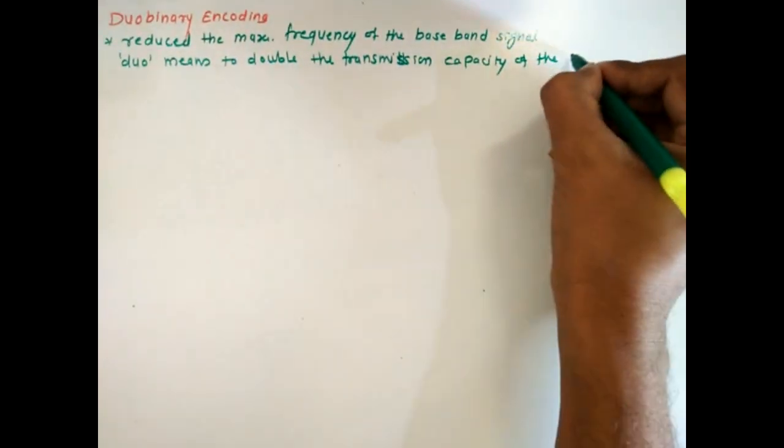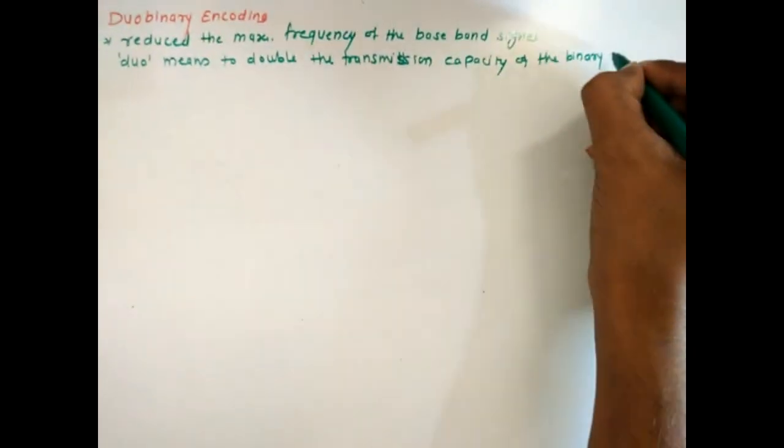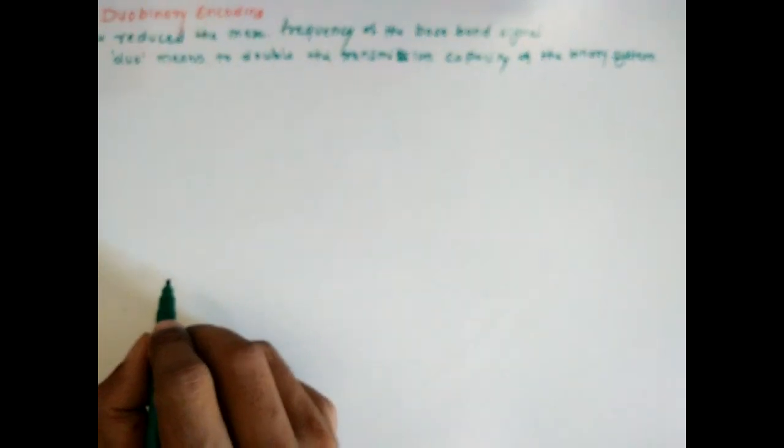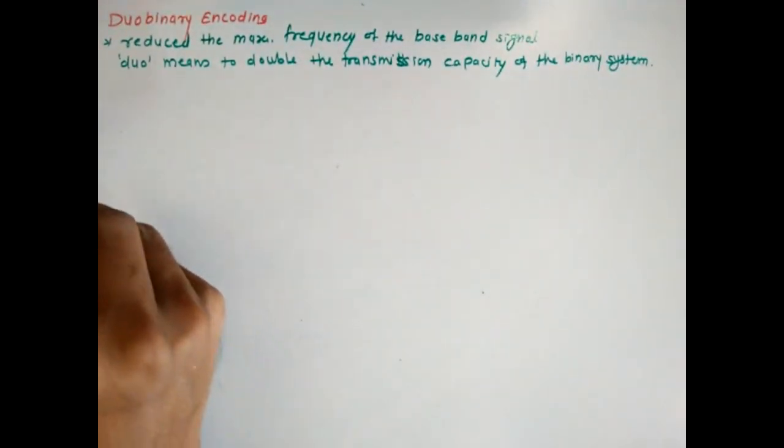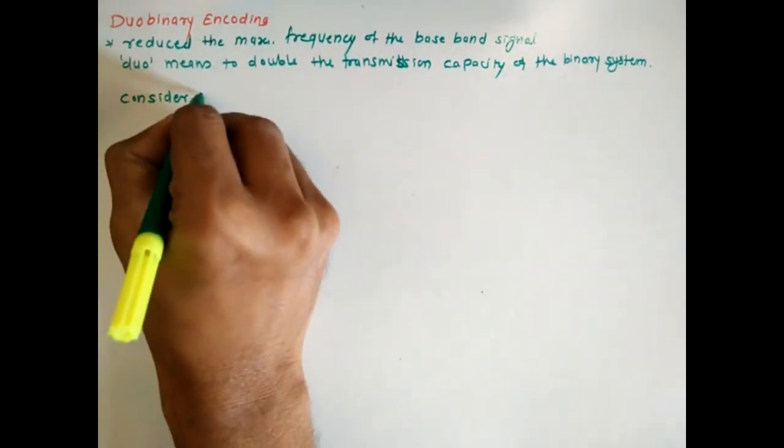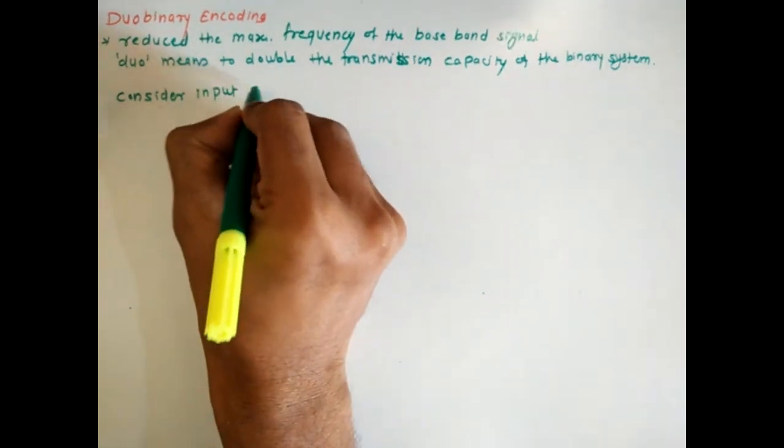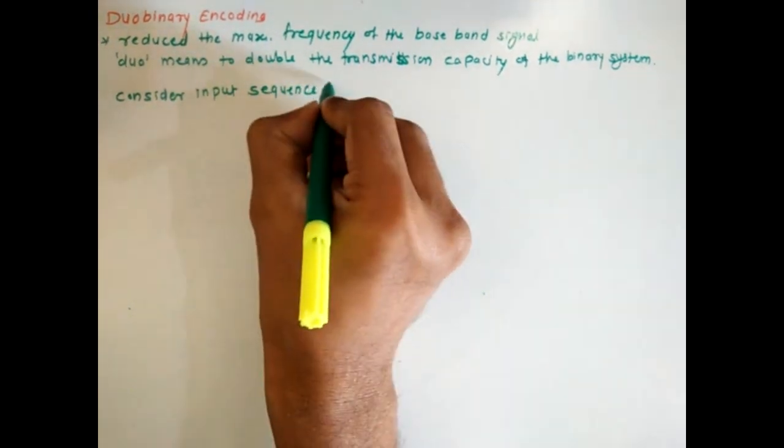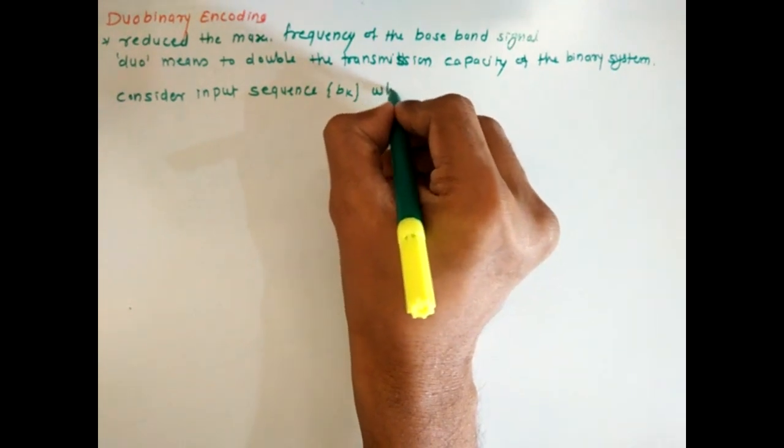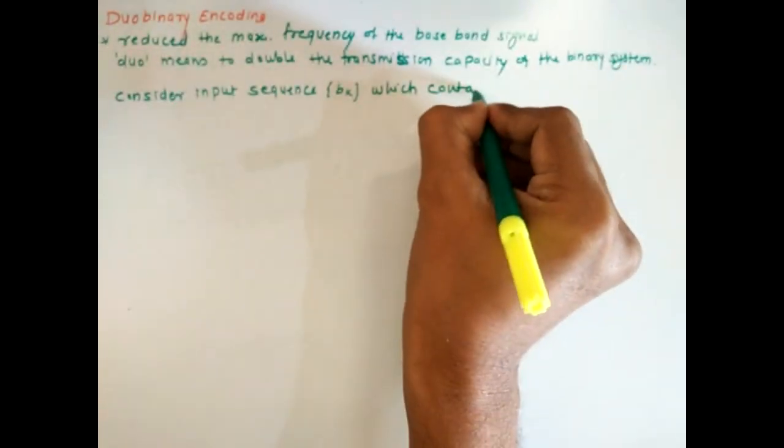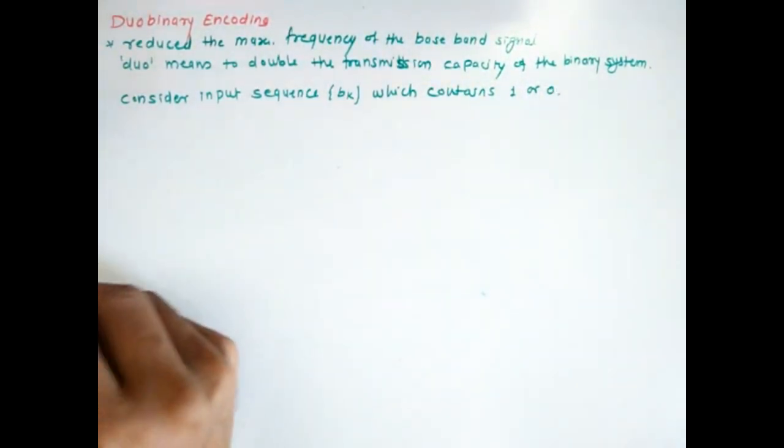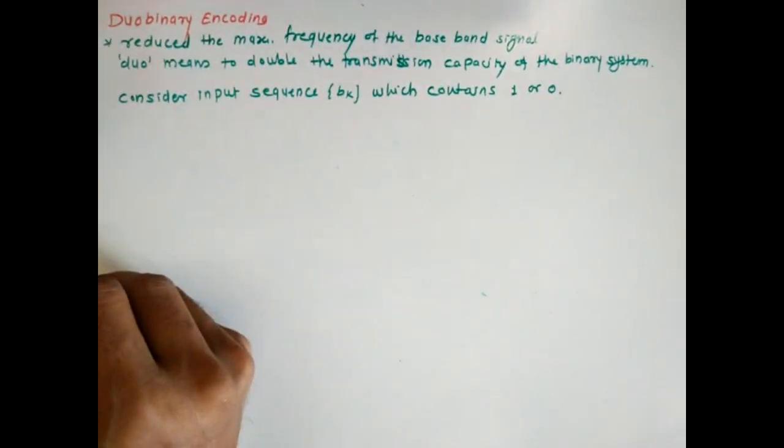It doubles the capacity of the binary system. Now to understand this, consider an input sequence bk which contains one or zero.